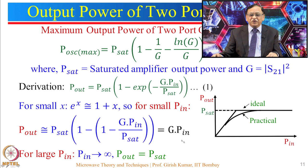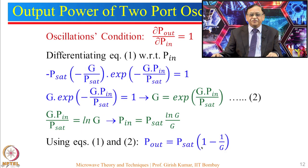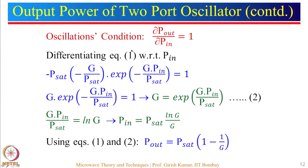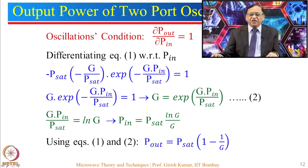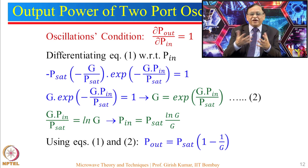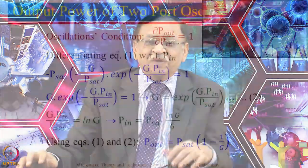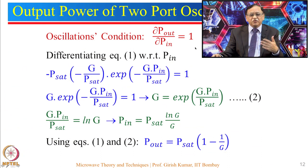Now let us derive the oscillation condition. The condition is that the rate of change of output power with respect to input power should equal 1. For sustained oscillation, the rate of change of P_output must equal the rate of change of P_input. We apply this oscillation condition and differentiate the output power expression with respect to P_input. Setting the derivative equal to 1 gives an equation from which we find G at the oscillation point.